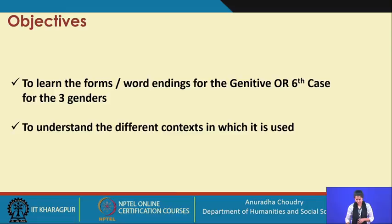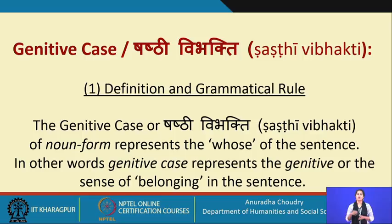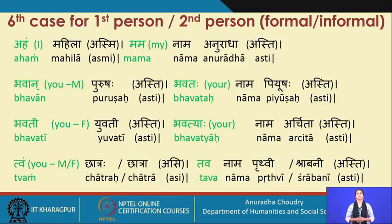The second objective is to understand the different contexts in which this case is used. A simple definition and grammatical rule for the genitive case, also known as the shashti or the sixth vibhakti, is the following: the genitive case represents the 'whose' of the sentence. As we saw when building sentences in Sanskrit, the question 'whose car, whose house' will be answered using the sixth case — it represents the sense of belonging.